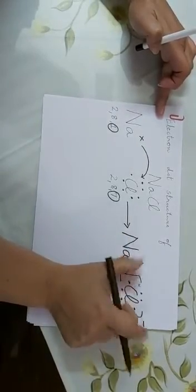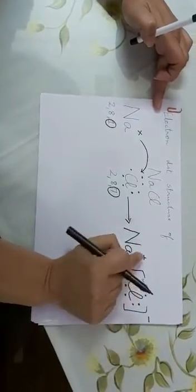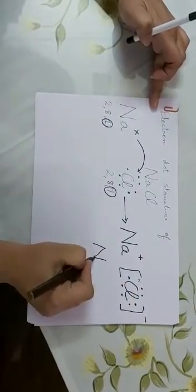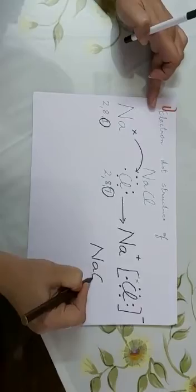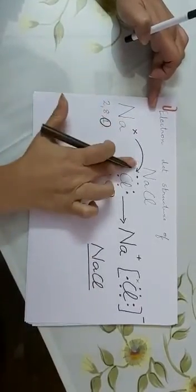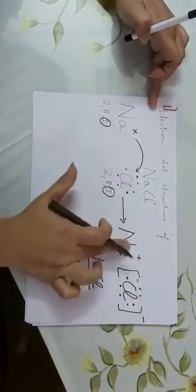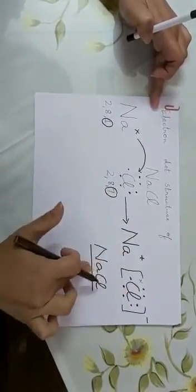Now plus and minus, they attract each other by strong electrostatic force of attraction. So NaCl is formed. What kind of bond is being shown here? Ionic bond. And this is the electron dot structure of NaCl.